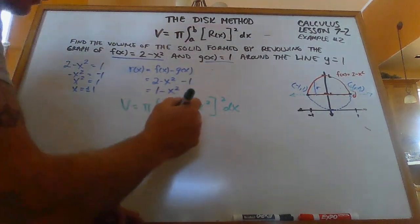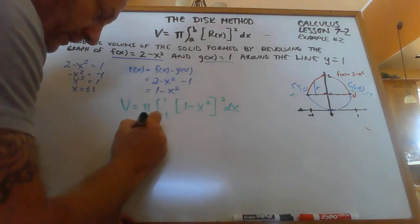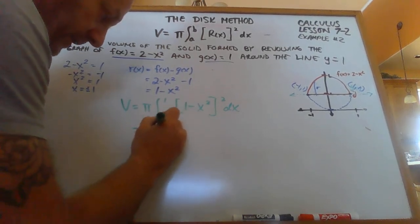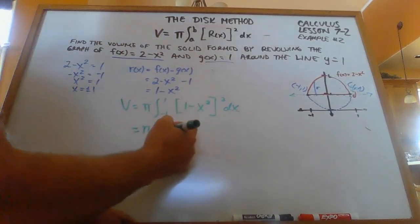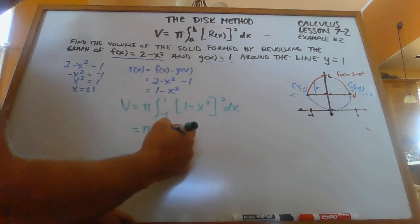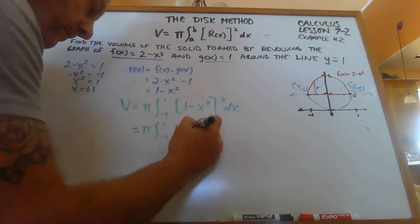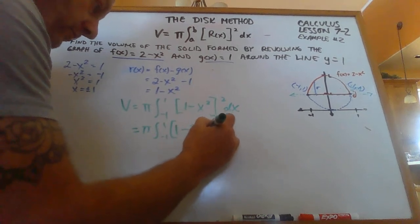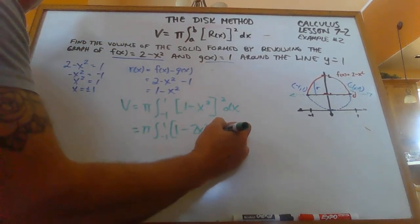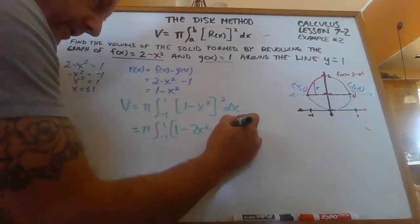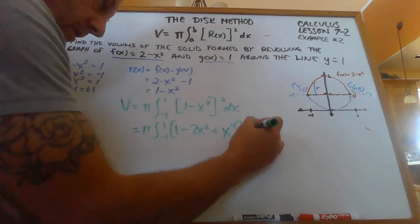And I go ahead and I square this, and you can FOIL that. But this ends up being 1 minus 2x squared plus x to the 4th dx.